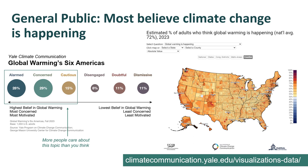Here we have a map of trends across the U.S. on beliefs, risk perceptions, policy support, and behaviors around climate change from the Yale Program on Climate Change Communication. Red indicates the greatest belief in climate change, and blue indicates the lowest belief. In this visualization, 72% of adults think global warming is occurring, so most of the general public do believe in climate change. It's important to keep in mind that climate perception varies by location in the country.